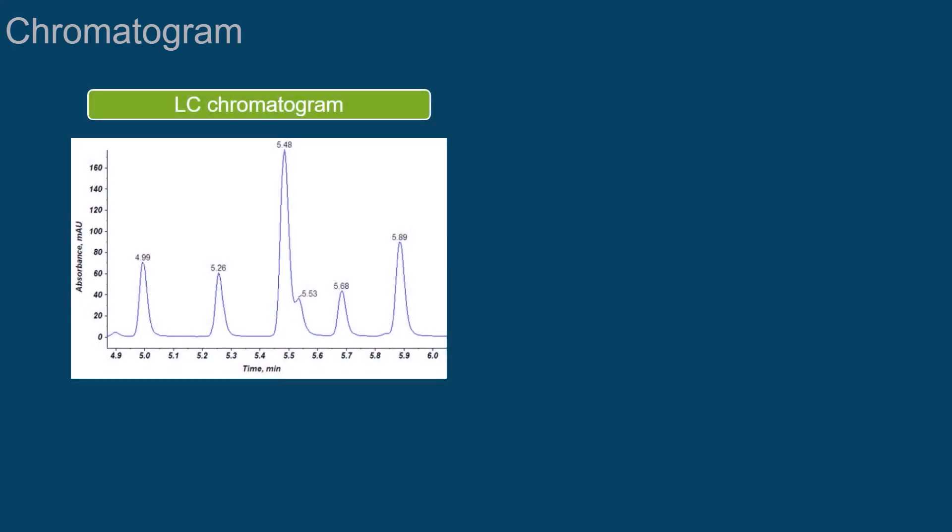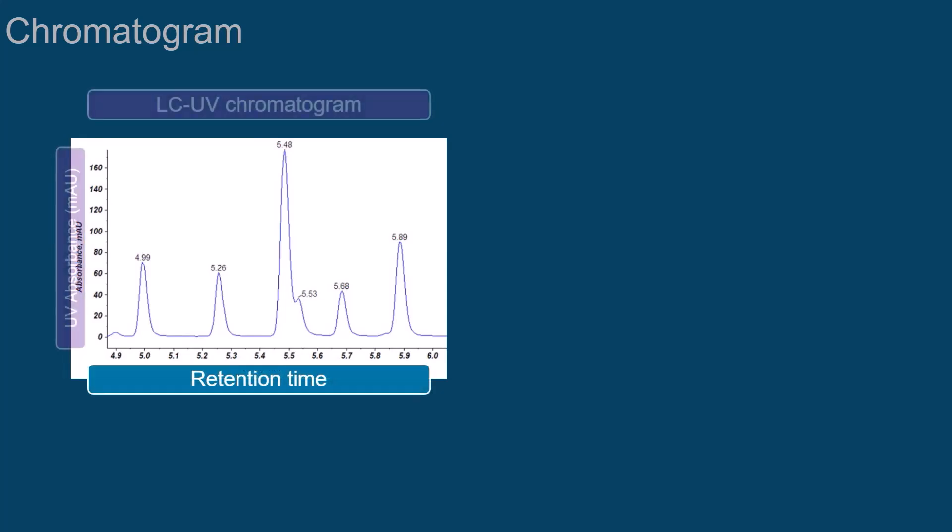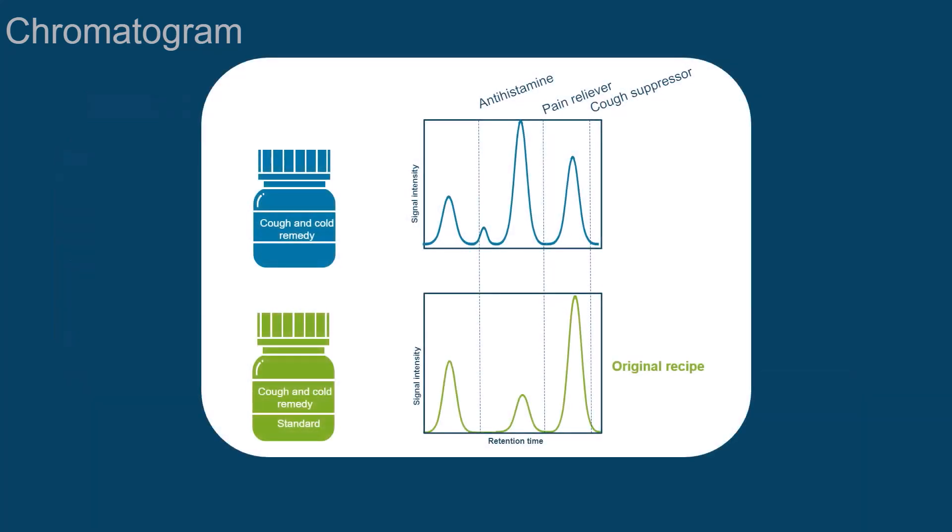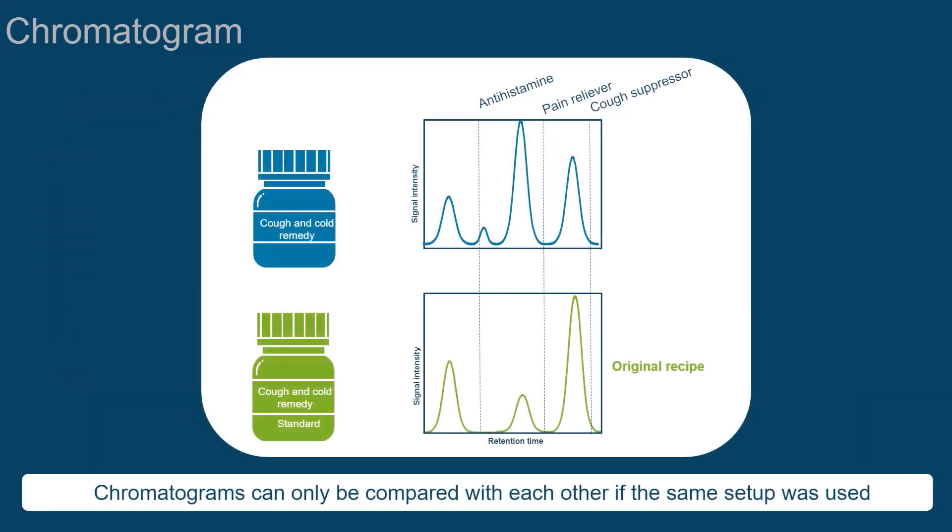The analytical output of an LC analysis is a chromatogram. It is a graphical representation of the signal intensity over the retention time. This example shows an LC-UV chromatogram. It is good practice not to use the signal height, but the peak area as the analytical result. As shown in an earlier example, chromatograms can be compared with each other, but only if the same setup was used for the analysis.